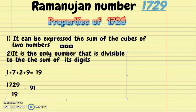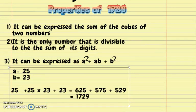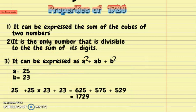The third property of 1729 is that it can be expressed as a² + ab + b². If we take a = 25 and b = 23, then 25² + 25×23 + 23² gives us 625 + 575 + 529, which equals 1729.